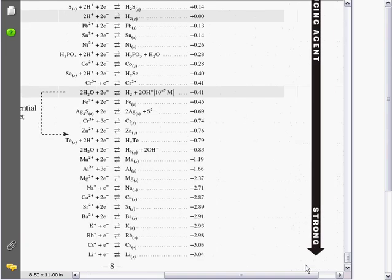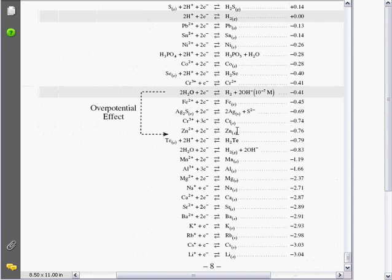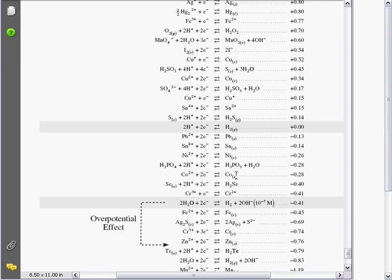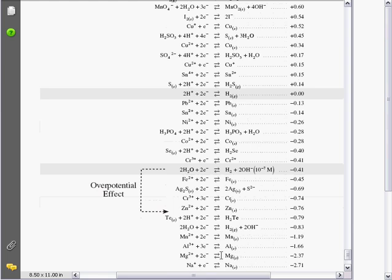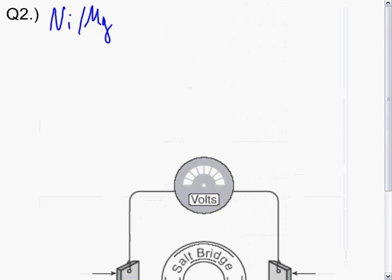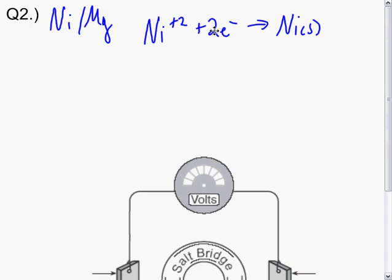As we go down the table, the elements on the right-hand side are the stronger reducing agents. So magnesium here will be our oxidation. So nickel²⁺ plus 2 electrons goes to nickel solid is our first reaction. And our other reaction is magnesium solid goes to magnesium²⁺ plus 2 electrons.